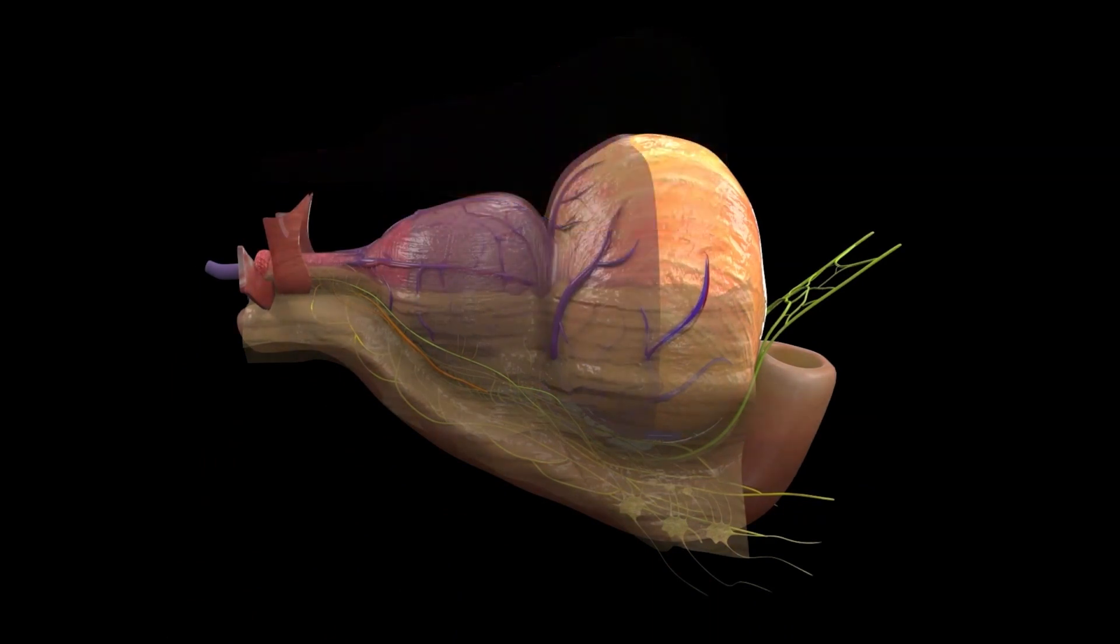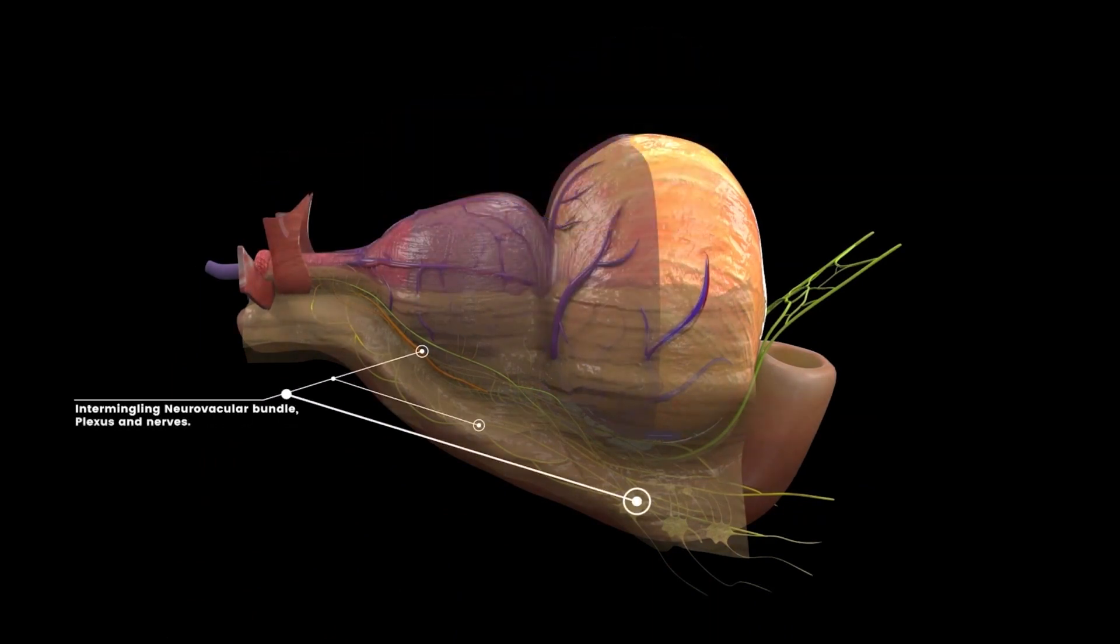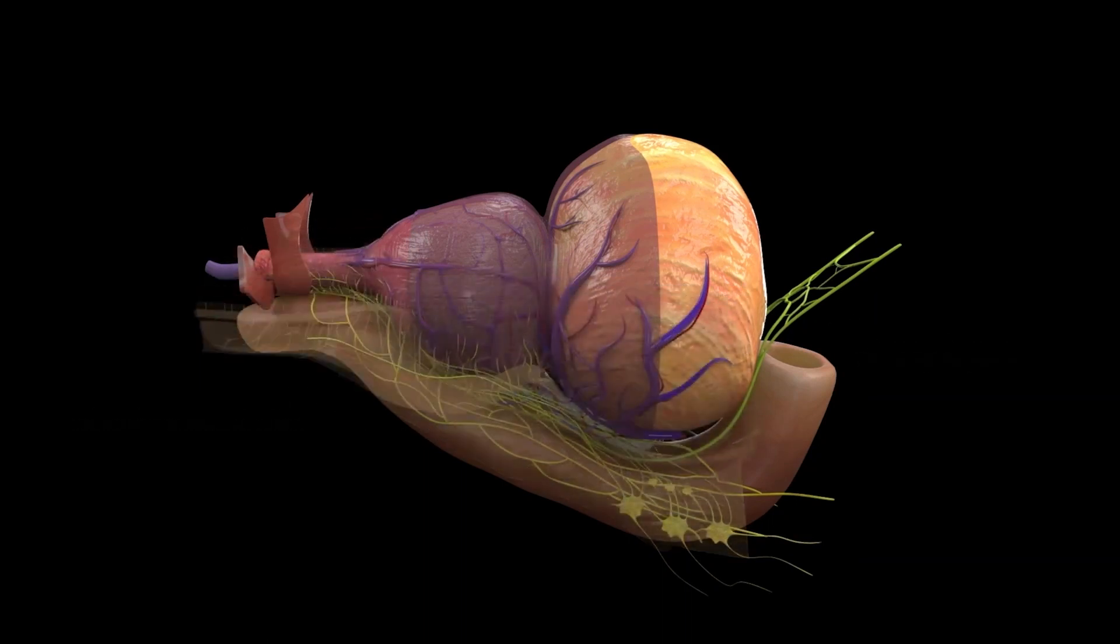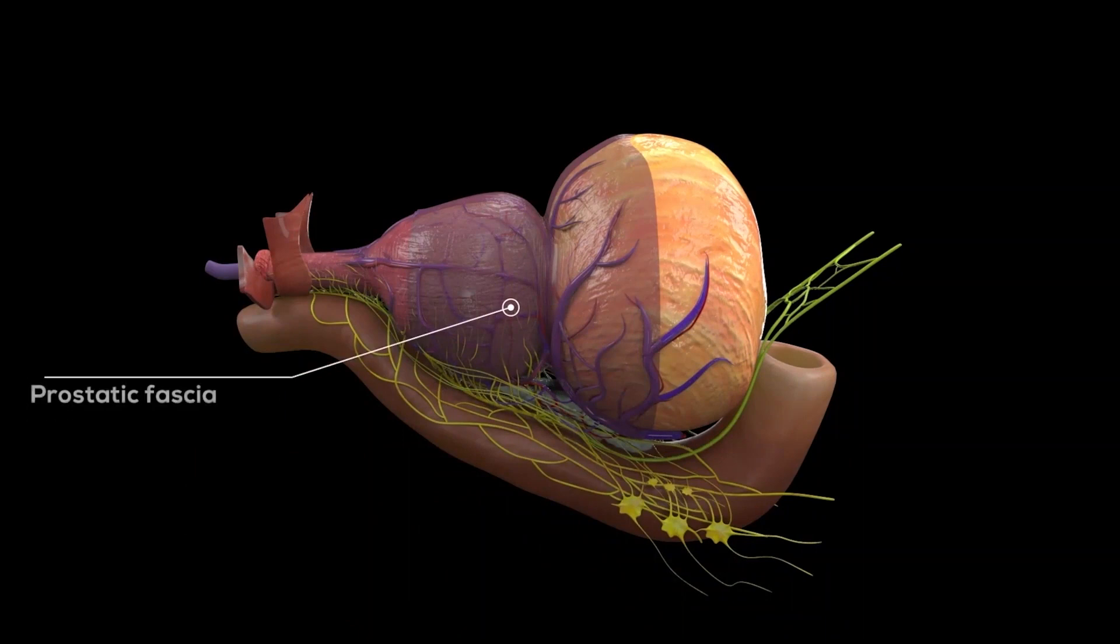Medial to this is the visceral layer of endopelvic fascia. The neurovascular bundle and corresponding autonomic nerves emerging from this neurovascular bundle lie between these two layers of the endopelvic fascia. Medial to the parietal and visceral layer of the endopelvic fascia lies the prostatic fascia, which has veins embedded in it.